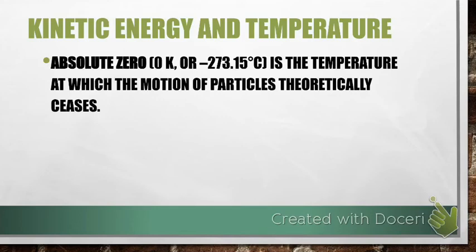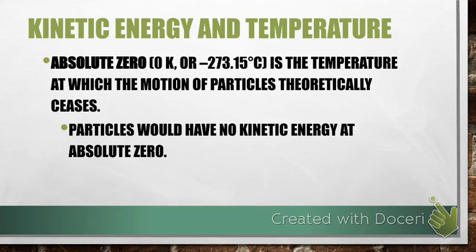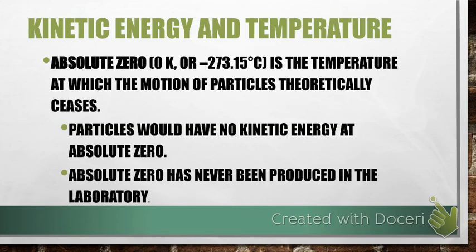So what happens if the motion of those particles completely stops? That's absolute zero. Our temperature here is going to be zero Kelvin or a negative 273.15 Celsius. Remember when we were converting earlier Kelvin to Celsius and our formula was Kelvin equals Celsius plus 273? This is where that formula comes from. When we're at absolute zero, particles will have no kinetic energy at all. However, absolute zero has never been produced in the laboratory. So, it is a theoretical case. They have come very, very close to absolute zero but never gotten there exactly.